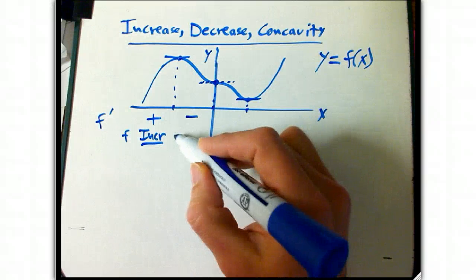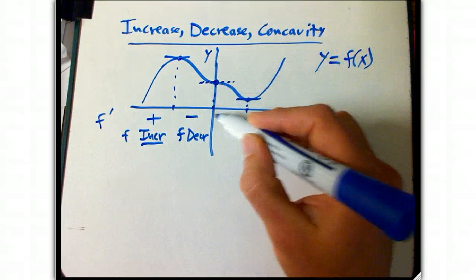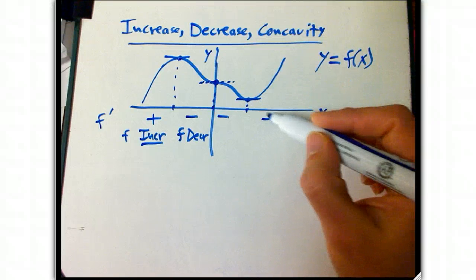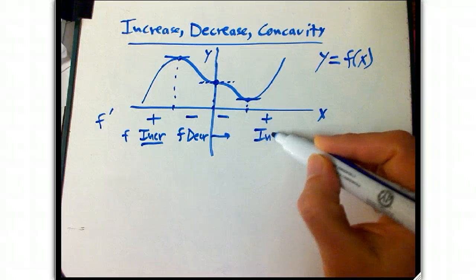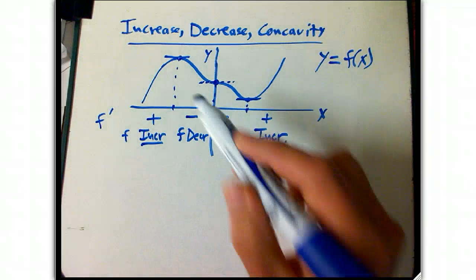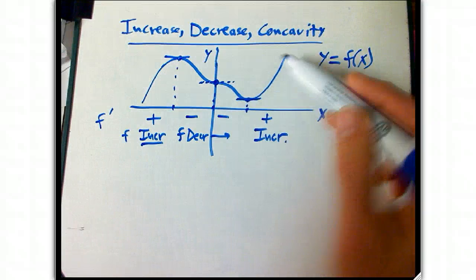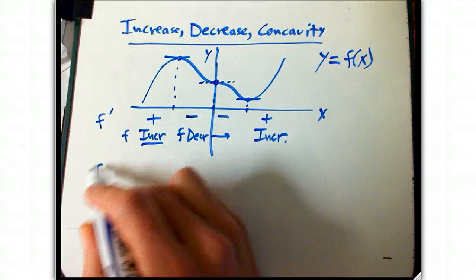When f prime is negative, f is decreasing. And it's negative in here as well. And over here, f prime is positive, and the function goes back to increasing. So that's good to know. Increasing, decreasing, increasing, because the derivative is going to be plus, negative, and then plus. What about the second derivative?